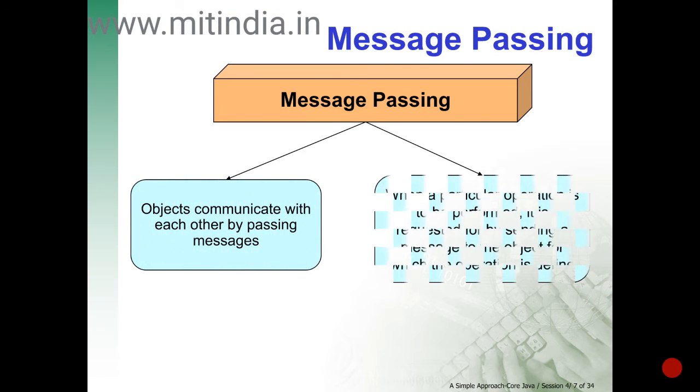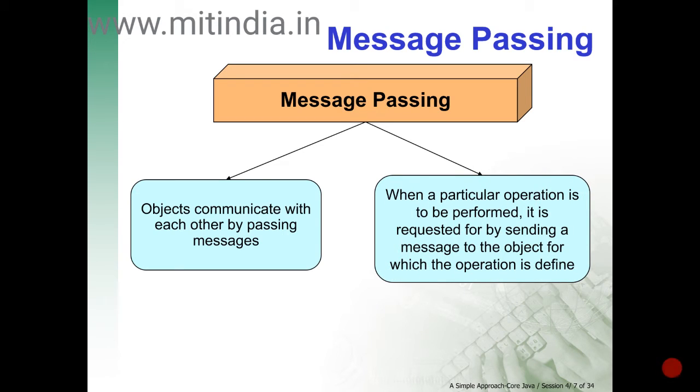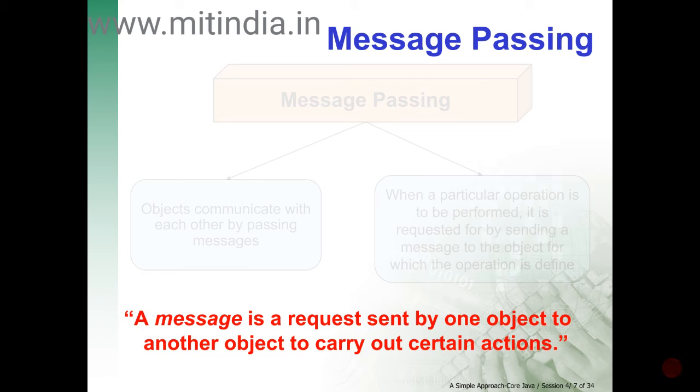Message passing: Objects communicate with each other by passing messages. When a particular operation is to be performed, a message is sent to the object for which the operation is defined. A message is a request sent by one object to another object to carry out certain actions.